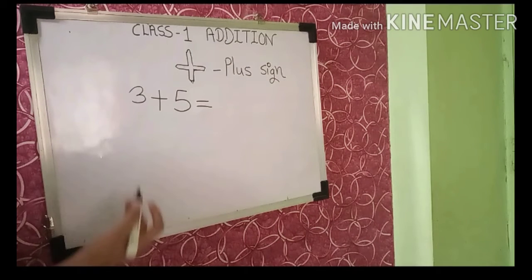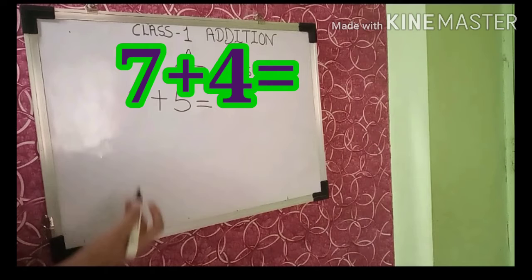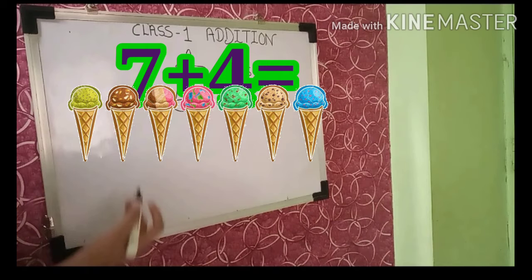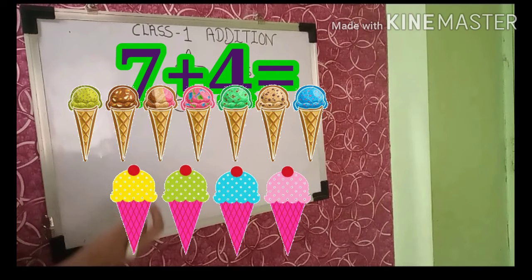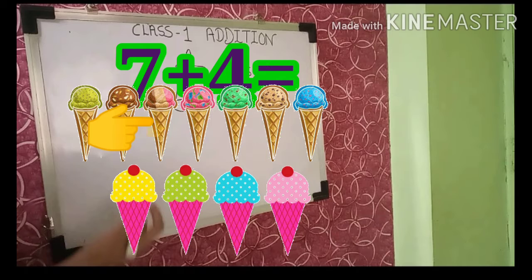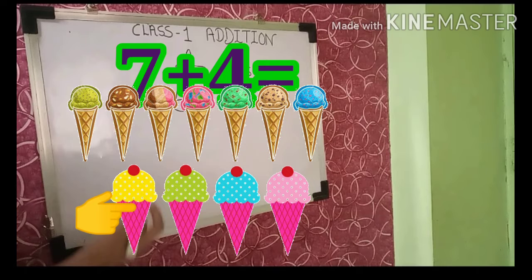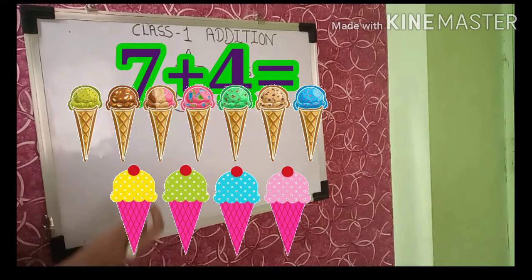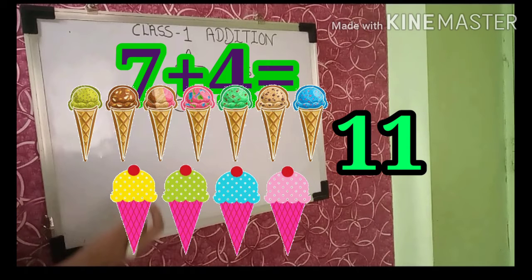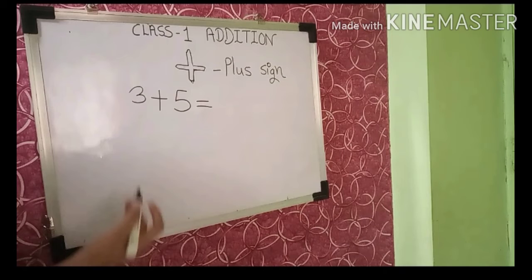Here is one more example. We have seven plus four — we are adding seven with four. We have seven ice creams and then we add four ice creams. Let us count together: one, two, three, four, five, six, seven, eight, nine, ten, eleven. So in total we are having eleven ice creams.